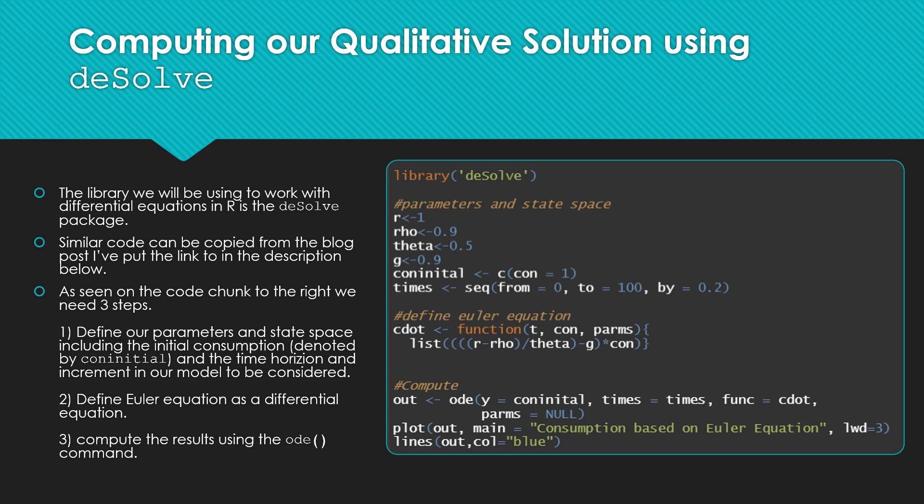We're then going to define our Euler equation as a differential equation, denoted as the following, where we write it as a function of time, con which is our consumption, and params which is necessary when using this ODE function, which is our third step below, computing these results with that said function.